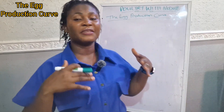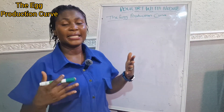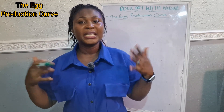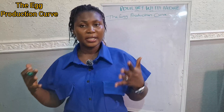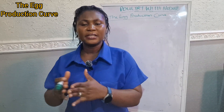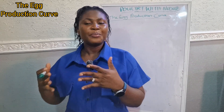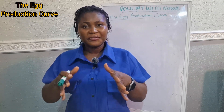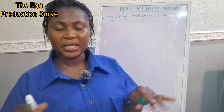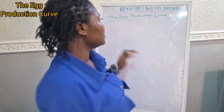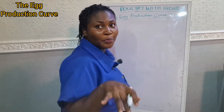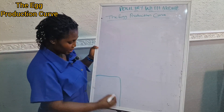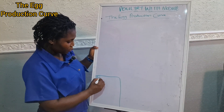The egg production curve has several phases. The first phase is the pullet phase. This is the phase where the young birds just start laying eggs. At this phase, egg production increases rapidly as the birds mature sexually — once the birds attain sexual maturity they start producing eggs and they start producing rapidly. So we have the first phase: the pullet phase.